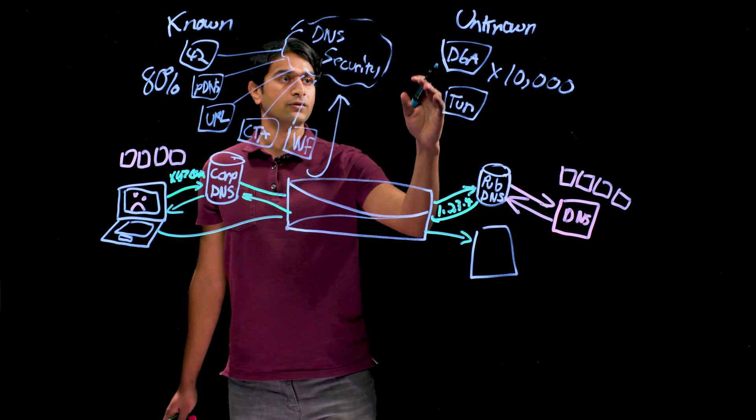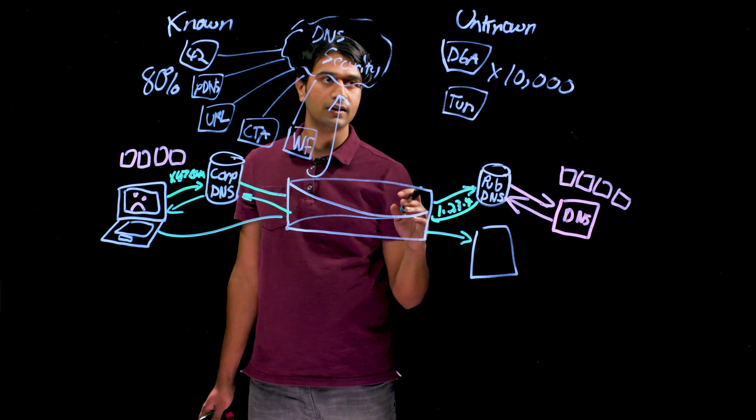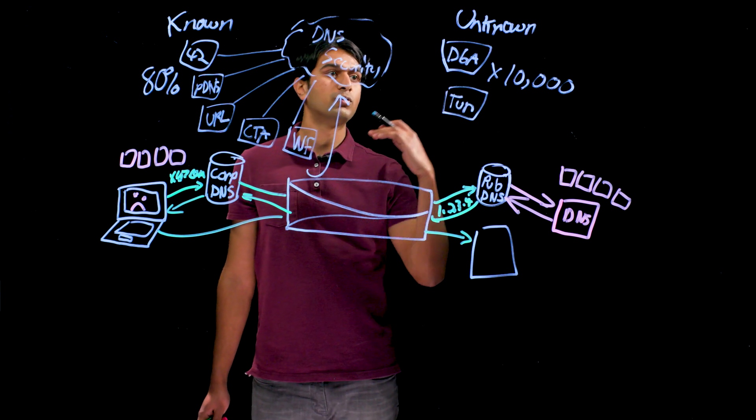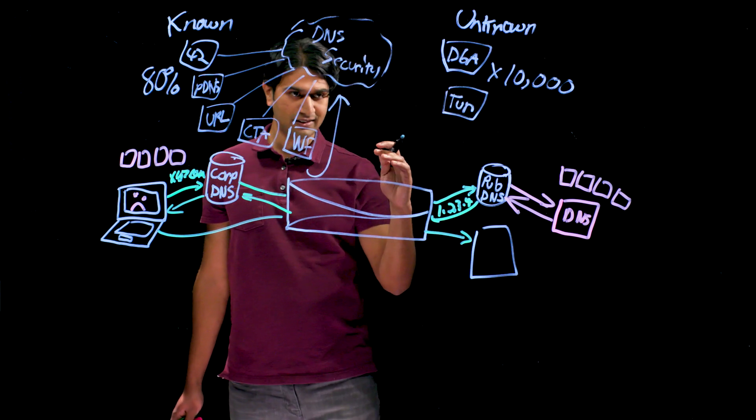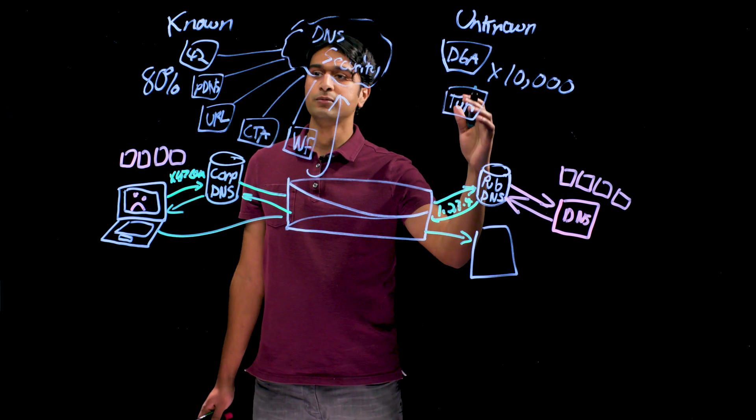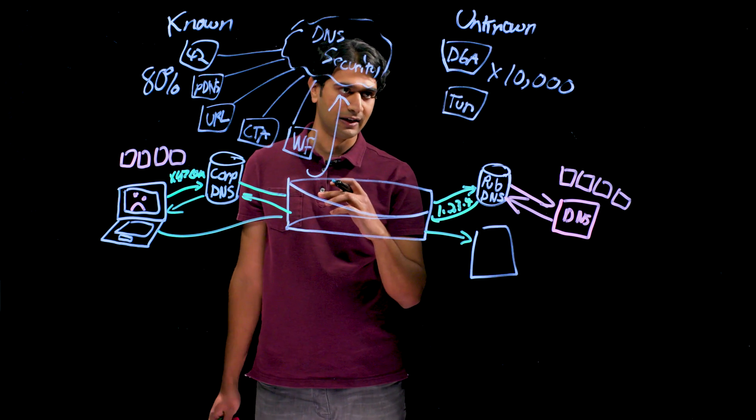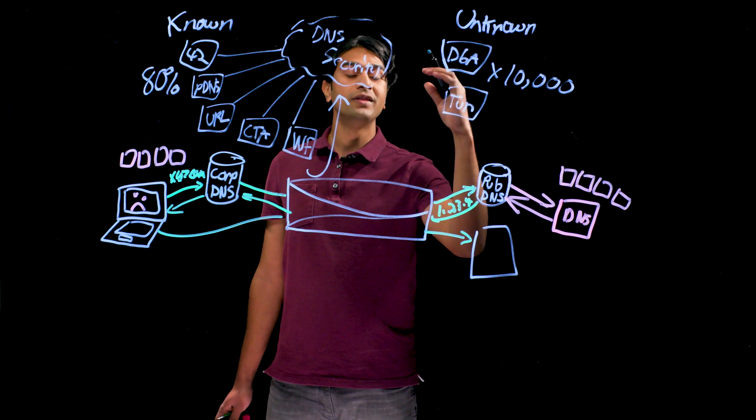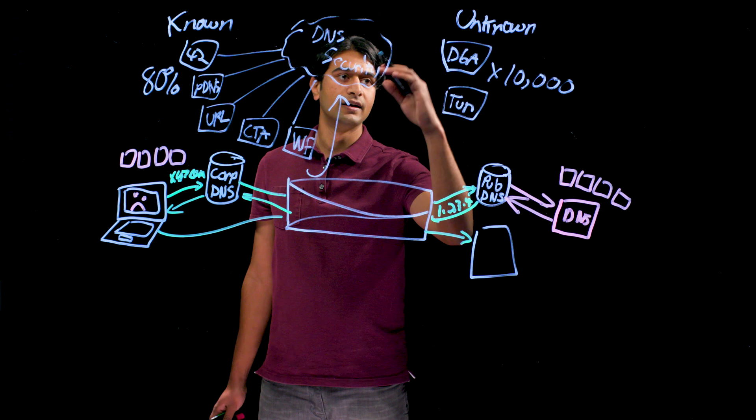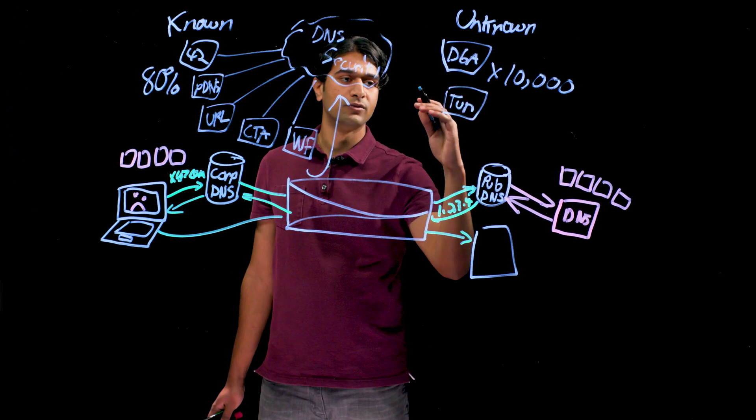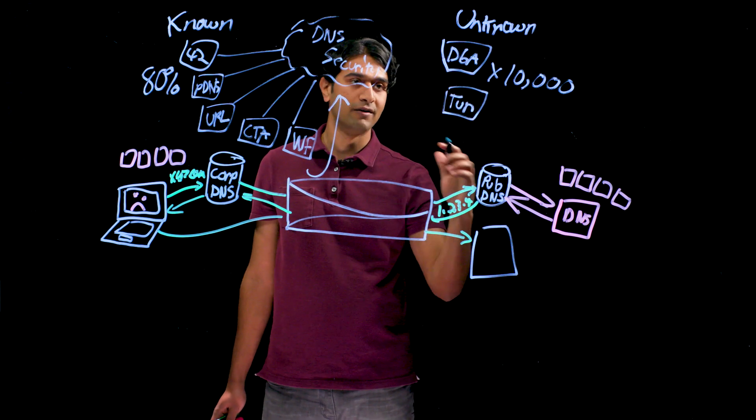For the unknown threats, for domain generation algorithms and tunneling, we have to do predictive analytics. We take machine learning algorithms and train them on this wealth of known good high fidelity DNS data that we have, and make a decision within milliseconds to identify domain generation algorithms and DNS tunneling for domains that we've never seen before.